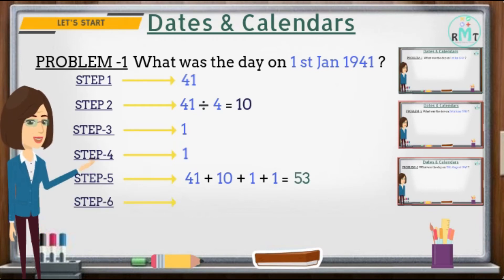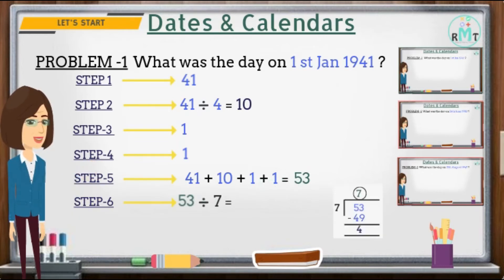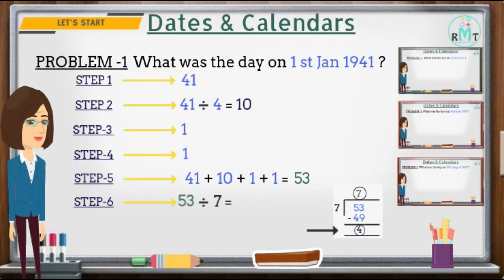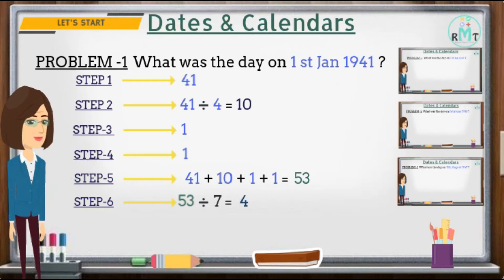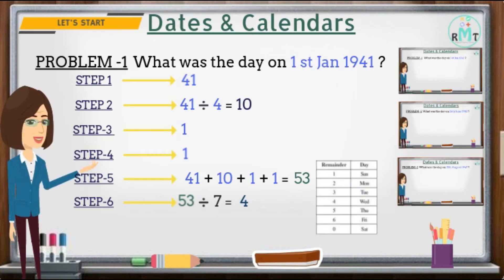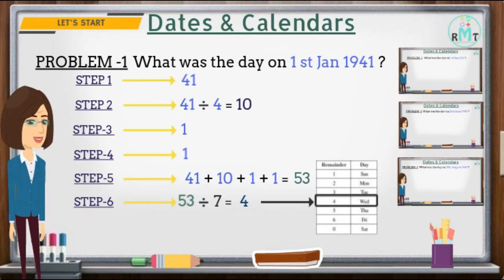Step 6: Divide 53 by 7. We get quotient equal to 7 and remainder equal to 4. We deal with the remainder only, so we write 4 as the answer. From the day key, remainder 4 corresponds to Wednesday. Hence, 1st January 1941 was a Wednesday.